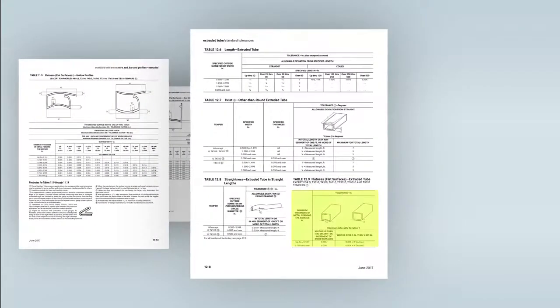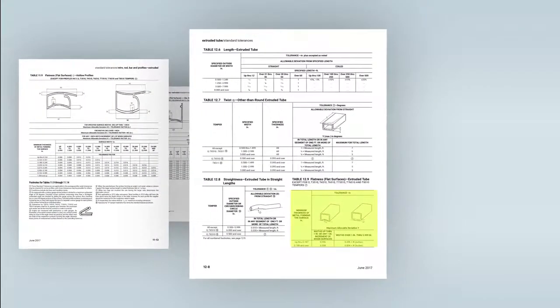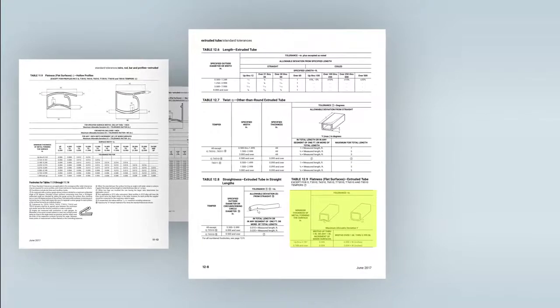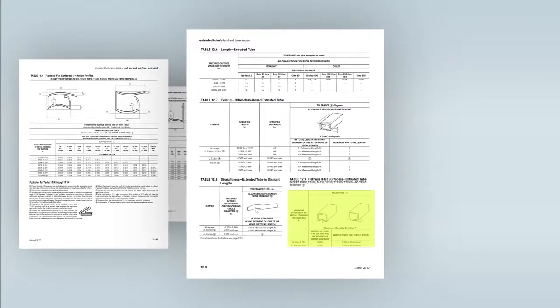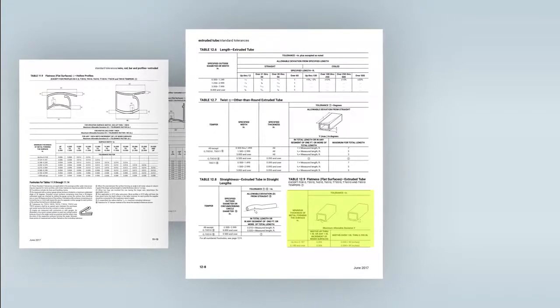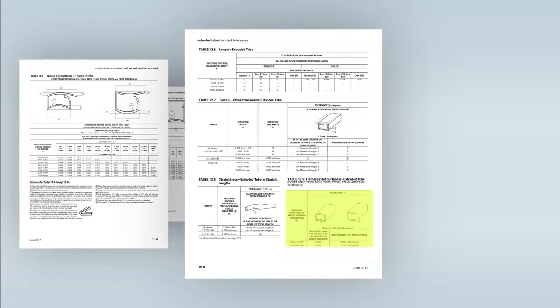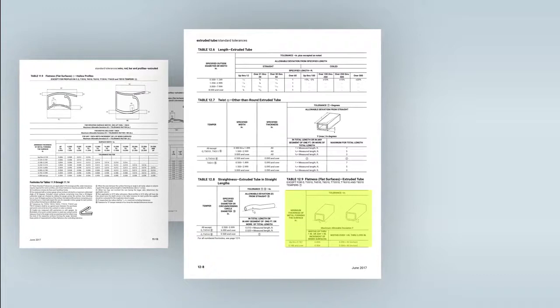Tolerances for square, rectangular, hexagonal, or octagonal tubes with a uniform wall thickness can be found in Table 12.9.